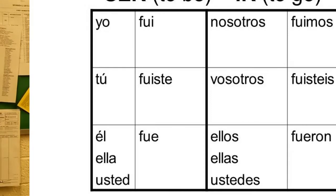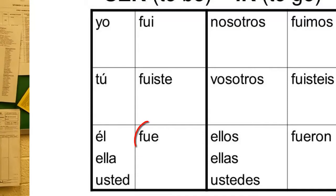Here's an easy way to remember. When it's the yo form — I went or I was — it ends in I: fui. When it's él, ella, or usted — all three of those words have E's in them — it's fue. So please don't get those two confused; it changes the meaning.